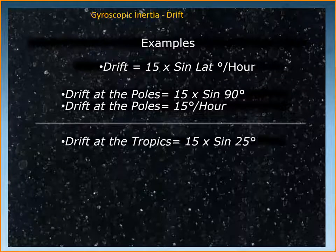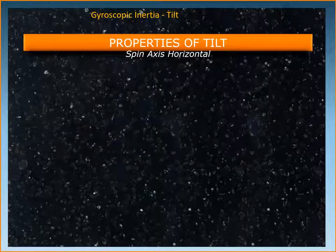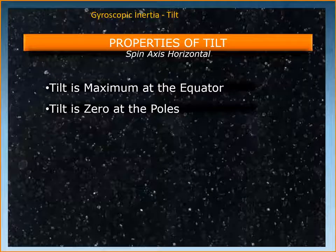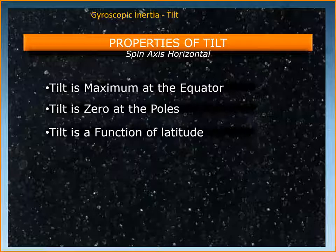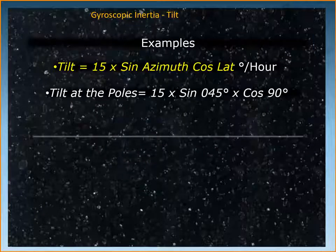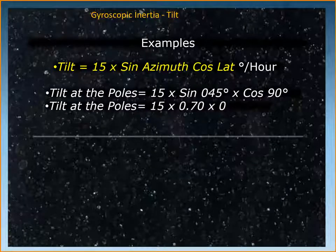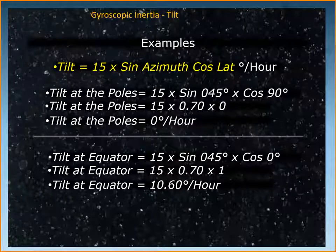Drift starts to reduce as you come down from the poles towards the equator. Tilt is maximum at the equator — it is the movement of the gyroscope axis around the vertical plane — and starts to reduce as you go from the equator towards the poles, becoming zero at the poles. Tilt is also a function of latitude and equals 15 × sin(azimuth) × cos(latitude) degrees per hour. For example, tilt at the poles = 15 × sin(azimuth) × cos(90°) = 0, whereas tilt at the equator can be maximum at about 10.60°/hr.